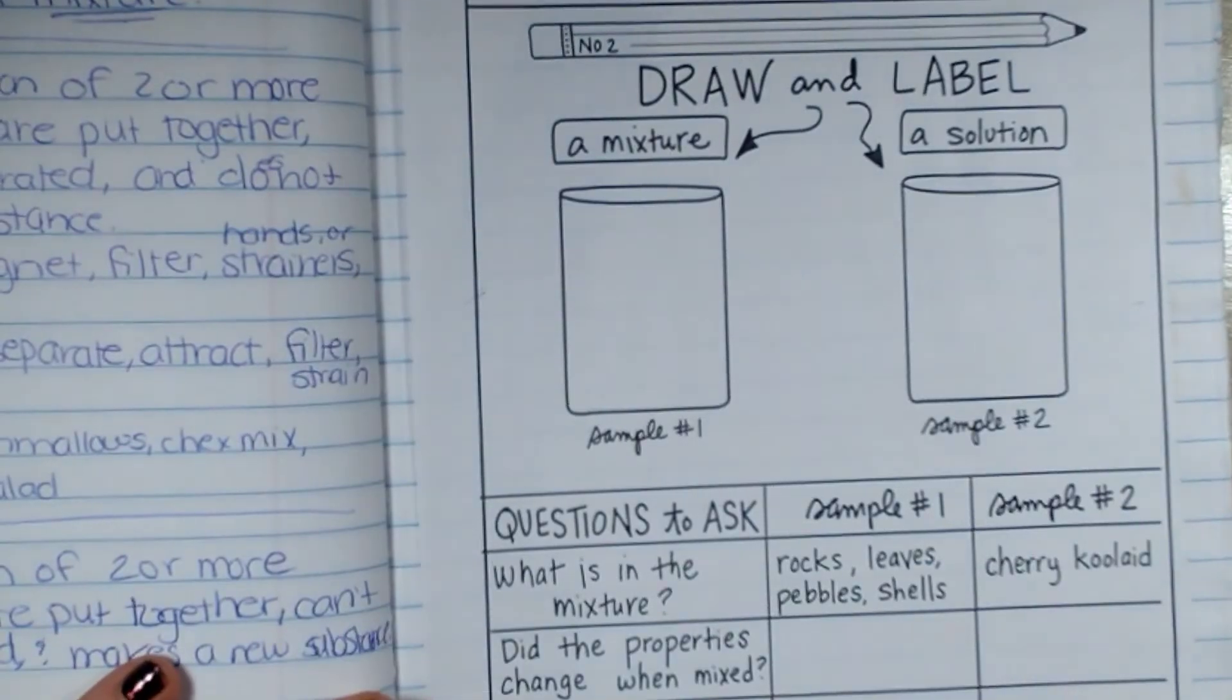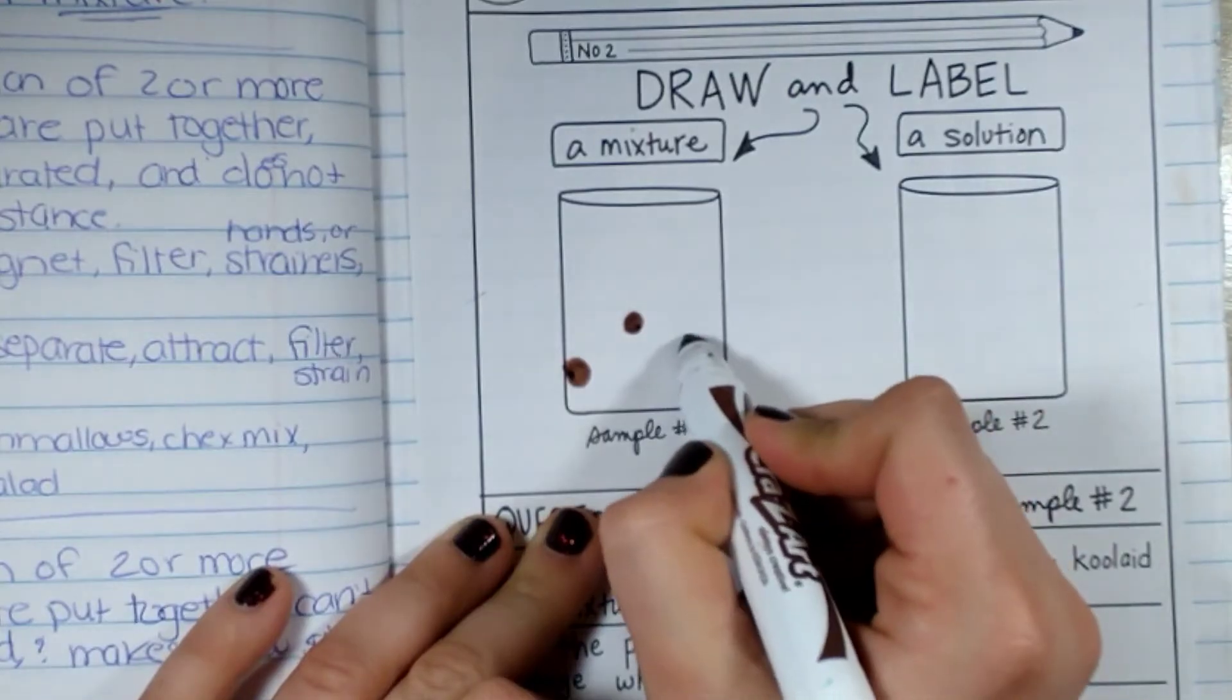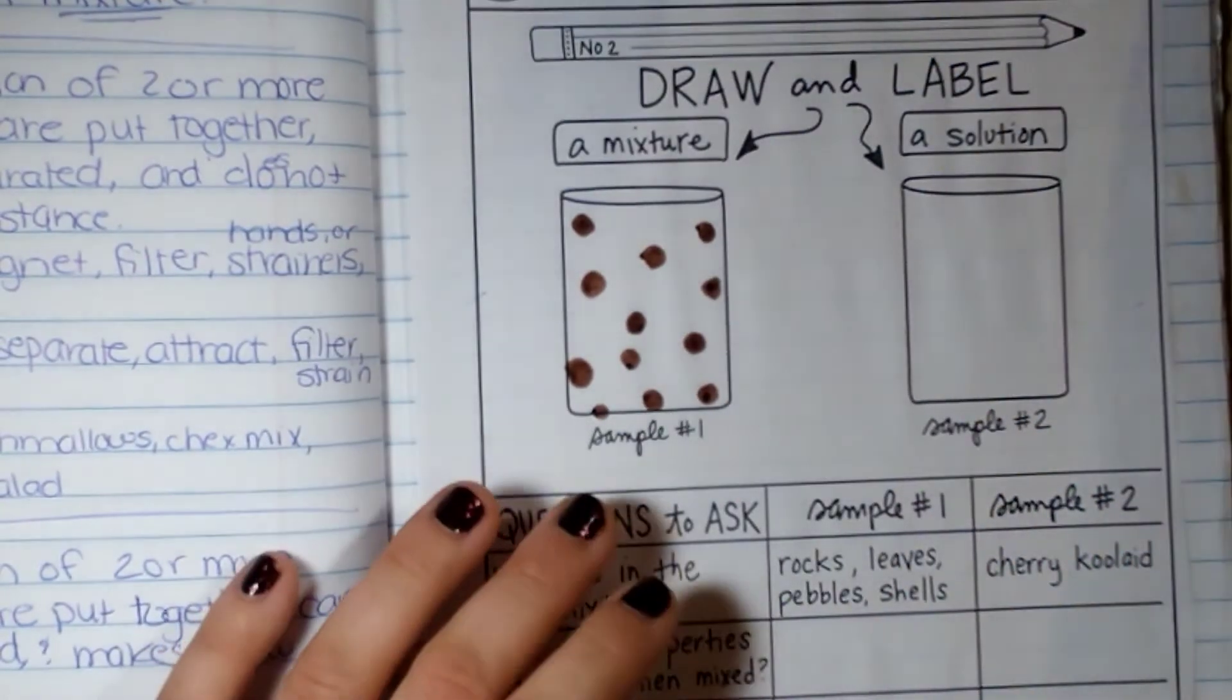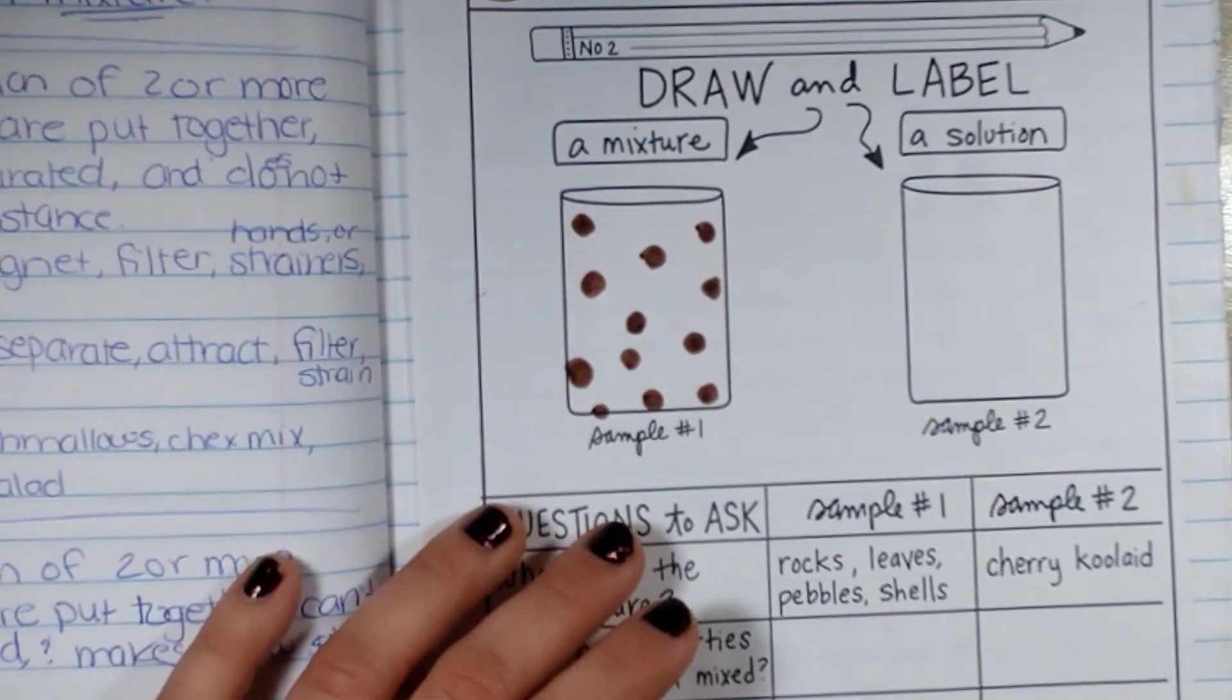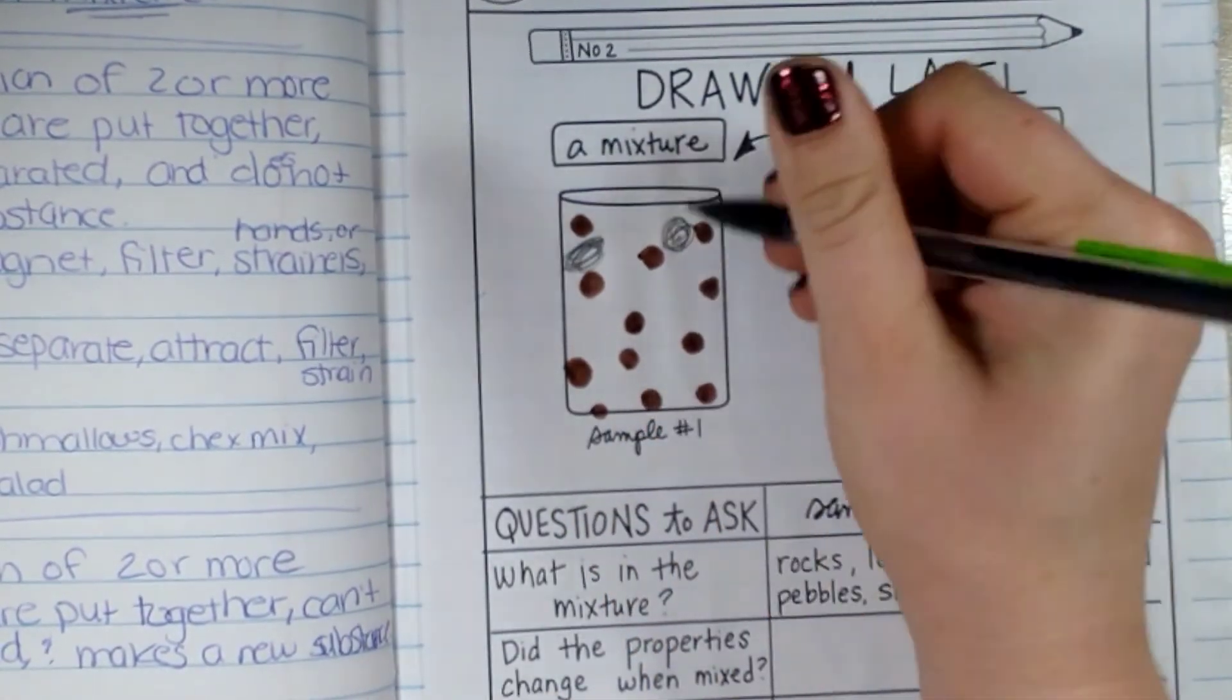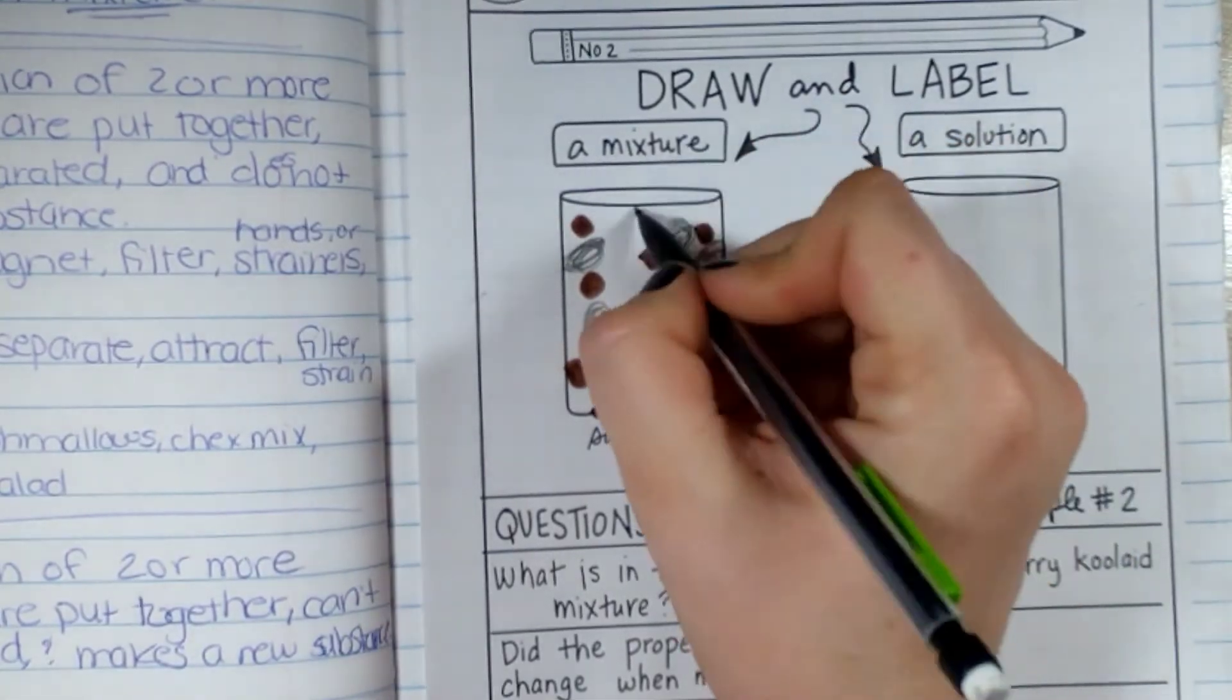We're going to draw a mixture. So this is going to be some rocks, leaves, pebbles and shells. So my pebbles are going to be here. This is my rocks I'm going to make. I will make my rocks pretty big here. There we go.